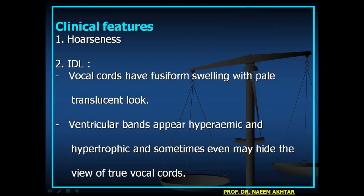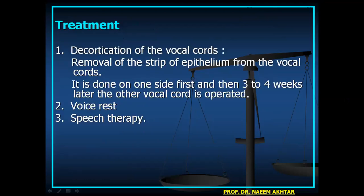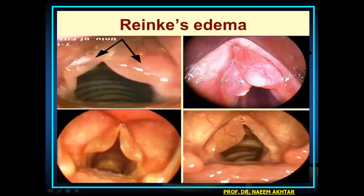Clinical features: hoarseness. On indirect laryngoscopy, vocal cords show fusiform swelling with a pale, translucent appearance. Ventricular bands appear hyperemic and hypertrophic, sometimes hiding the vocal cords. Treatment is decortication of the vocal cords — removal of a strip of epithelium — done on one side first, then the other side three to four weeks later. Voice rest and speech therapy are also advised. Photographs demonstrate Reinke's edema appearances.